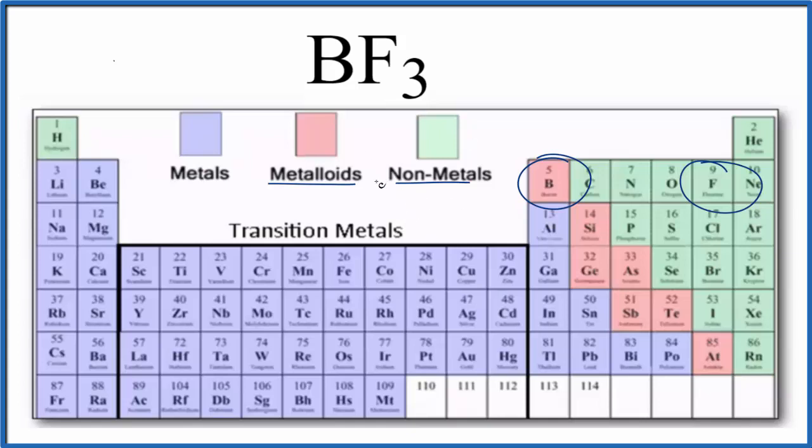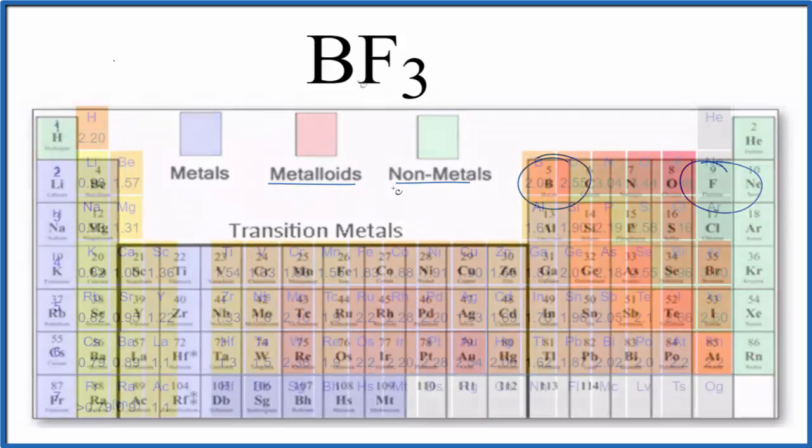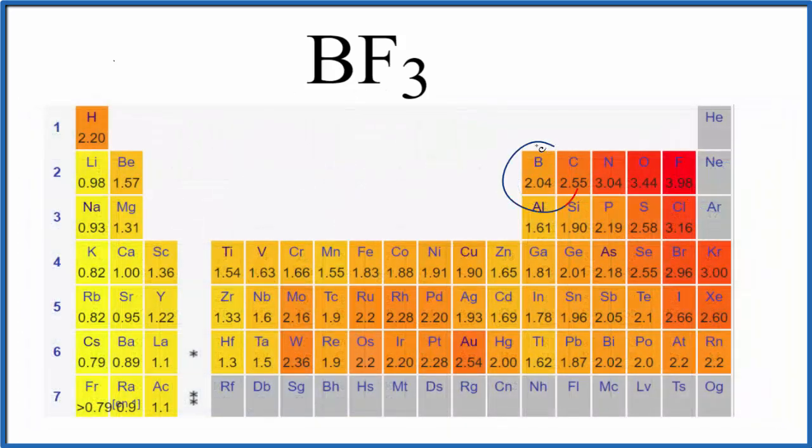Let's take a look at the difference in electronegativity, though, and see. So we have boron right here. That's 2.04. And fluorine, that's 3.98. That's a difference of 1.94.